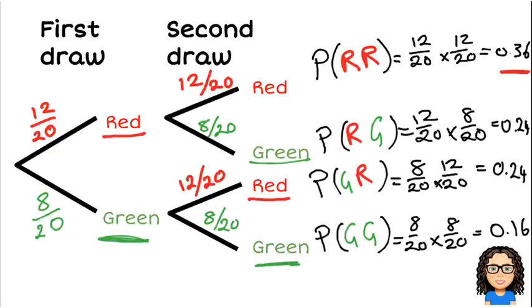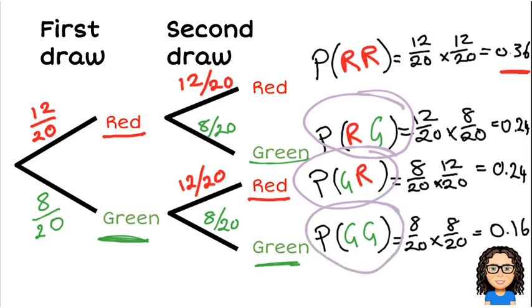So if we look at our tree diagram, which of these options have got at least one green? So we notice there, we've got this probability has one green, this probability has one green, and this probability has one green. So I've got three combinations here that have at least one green in them. So I could get a red and a green, or a green and a red, or a green and a green.